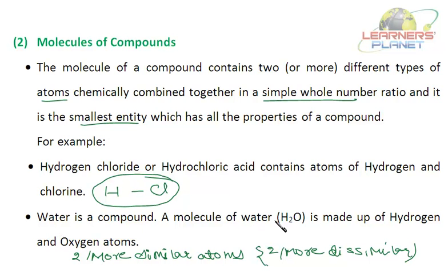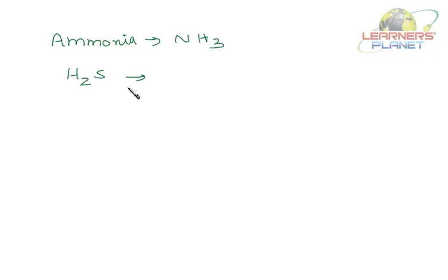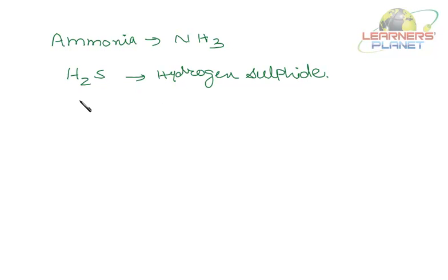Likewise, water is a compound. A molecule of water, H₂O, is made up of hydrogen and oxygen atoms. A molecule of ammonia is made up of nitrogen and hydrogen combined in a definite ratio. Hydrogen sulfide H₂S is another example — the atoms of the elements are combined in a definite ratio.